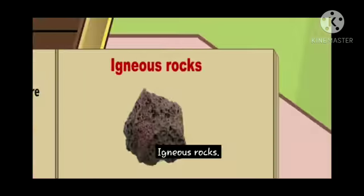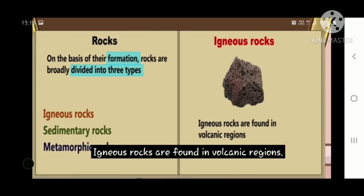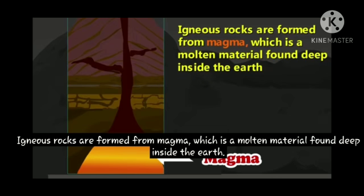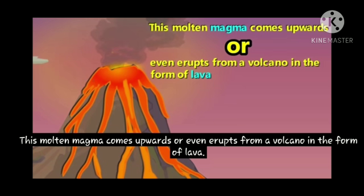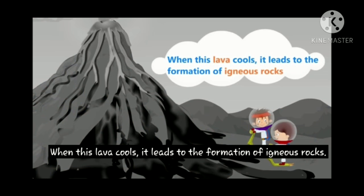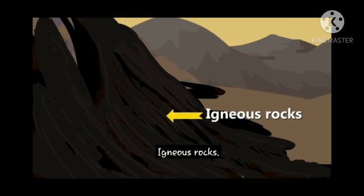First we will study about igneous rocks. Igneous rocks are found in volcanic regions. They are formed from magma, which is molten material found deep inside the earth. The molten magma comes upward or even erupts from a volcano in the form of lava. When this lava cools, it leads to the formation of igneous rocks.